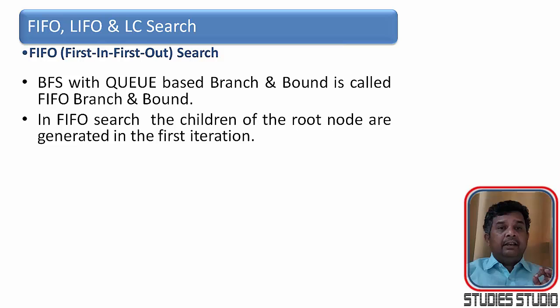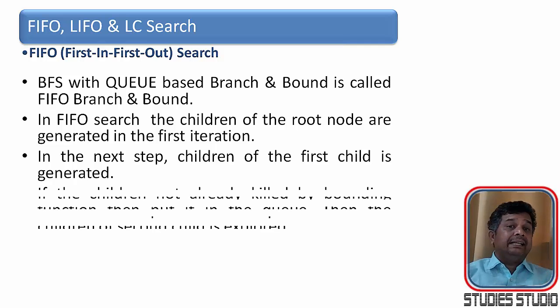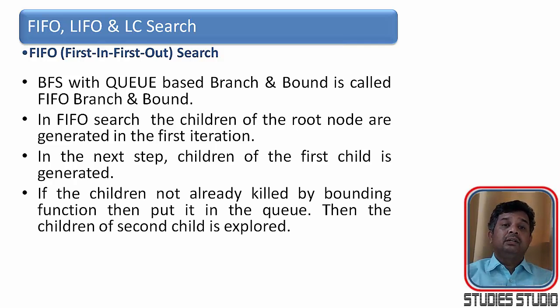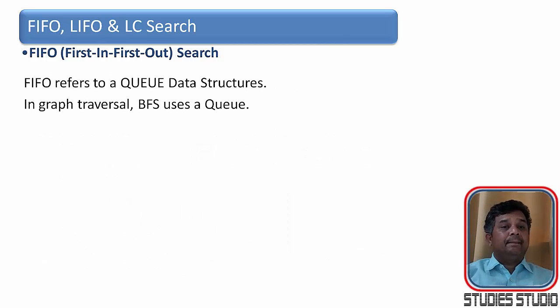So it means in FIFO search the children of the root node are generated in the first iteration. And in the next step the children of the first child is generated. And if the children is not already killed by the bounding function, then put it in the queue. Then the children of the second child is explored. Put all the children in a queue except for those children which are killed.